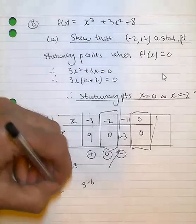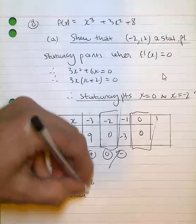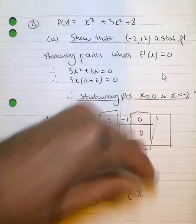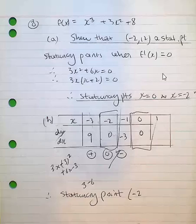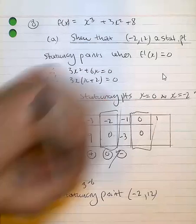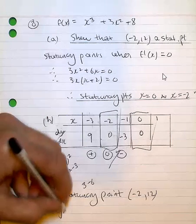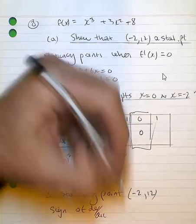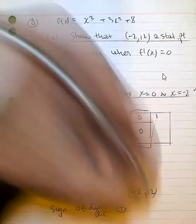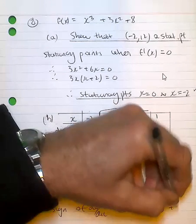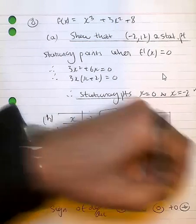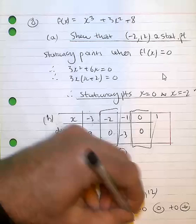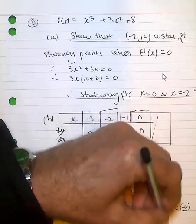Therefore, stationary point (-2, 12), your sign goes from, well, dy/dx goes from positive to 0 to negative. So therefore, a maximum at (-2, 12).